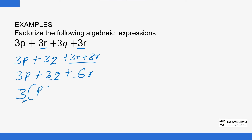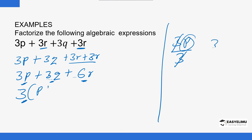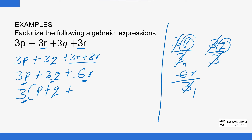Once you identify the common factor — 3 is a factor of each term — it should actually be the highest common factor, the highest factor that can divide all the terms. Once you identify that highest common factor, divide each term by it. So 3p divided by 3 gives p, 3q divided by 3 gives q, and 6r divided by 3 gives 2r. So we have 3 into (p + q + 2r).